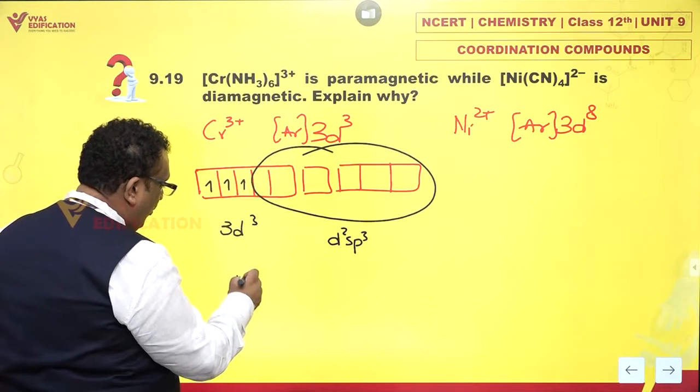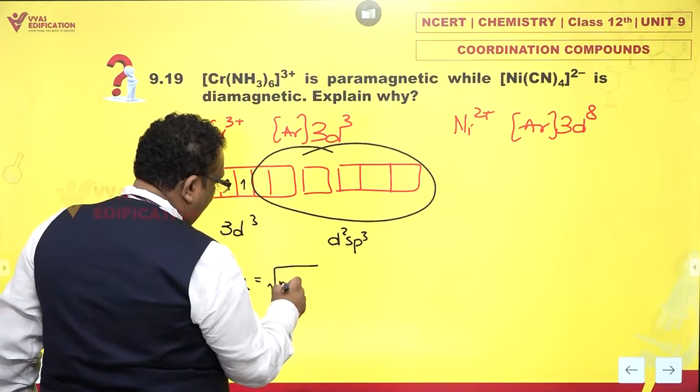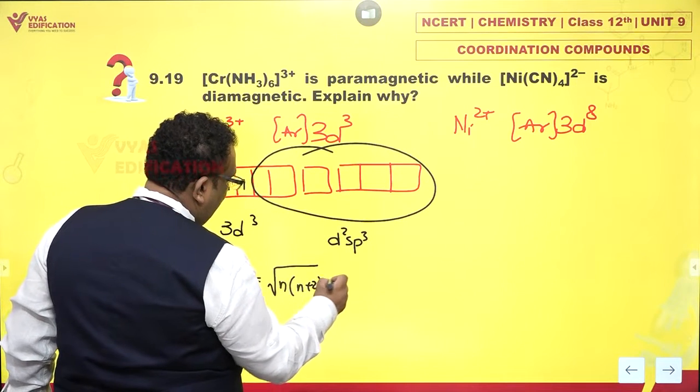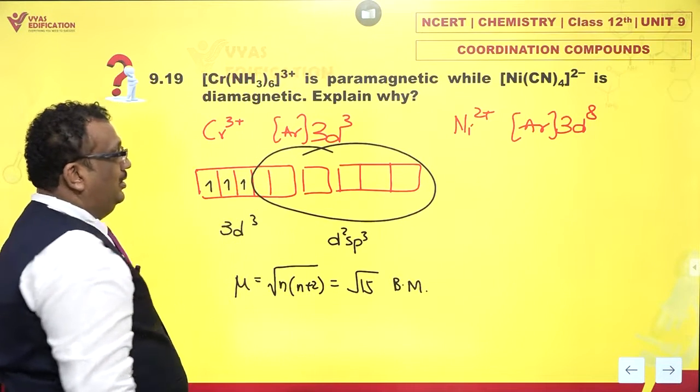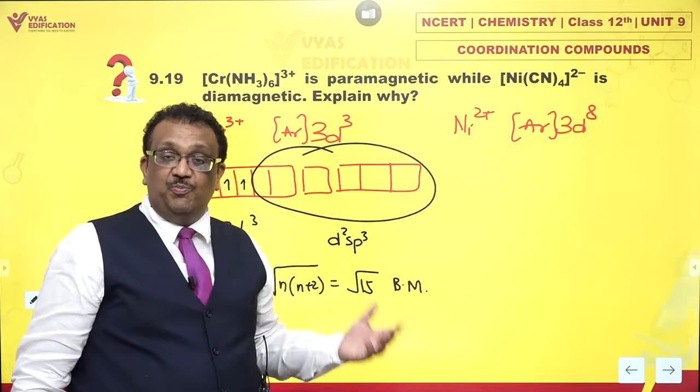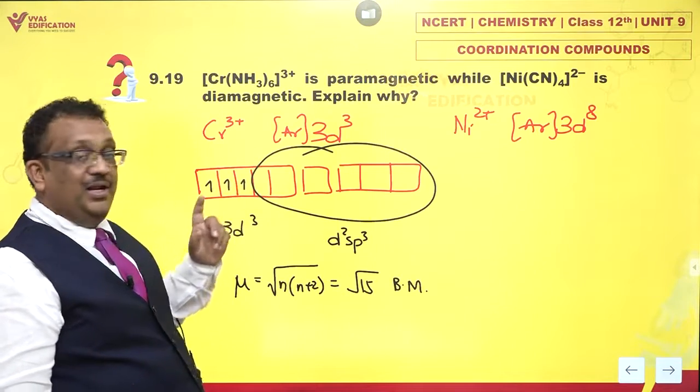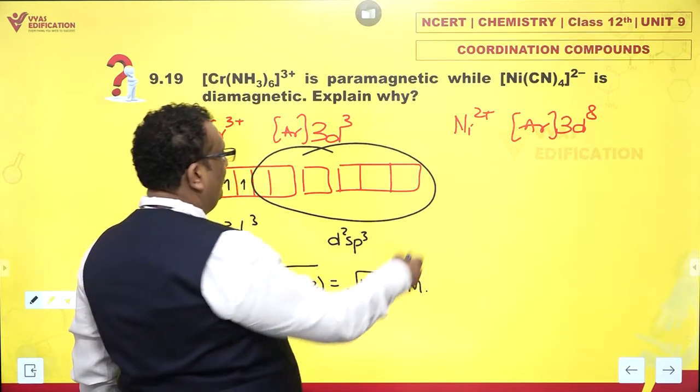Spin-only magnetic moment is √[n(n+2)], which will be √15 Bohr magneton. Ultimately, it is paramagnetic because of these unpaired electrons. Fine.